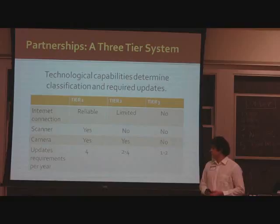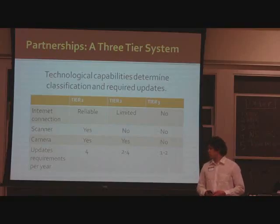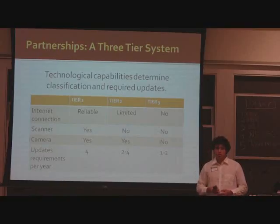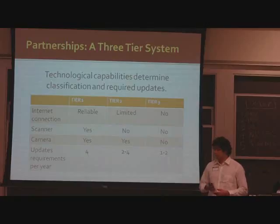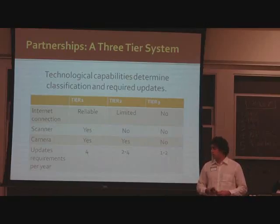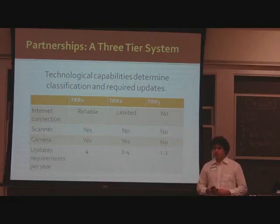For the first tier, we propose we include NGOs with reliable internet connections, with a scanner and a camera, and we require them to provide four days a year.